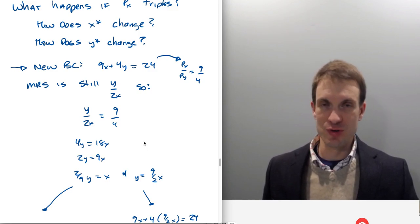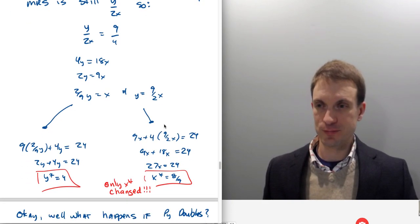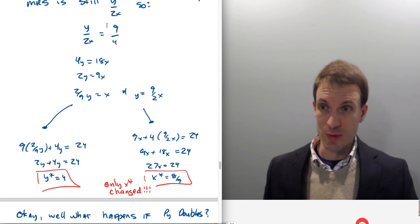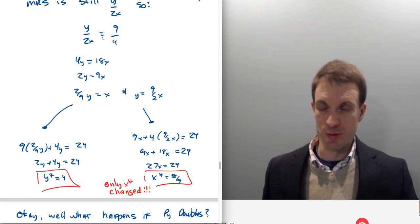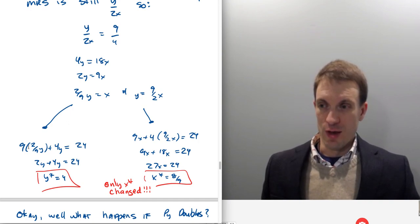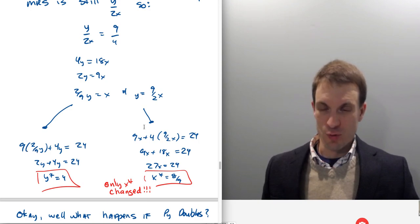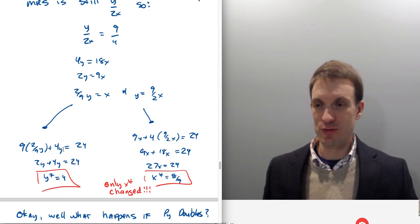Nothing else changed. Marginal rates of substitution are still going to be the same. We haven't changed the utility function. All we do is change the price ratio. So it's a really simple analysis. I'm just going to take my marginal rate of substitution from above. Here's my new price ratio because the price of good X tripled. I'm going to solve this for Y, solve it for X, plug into the budget constraint to solve for my demands.